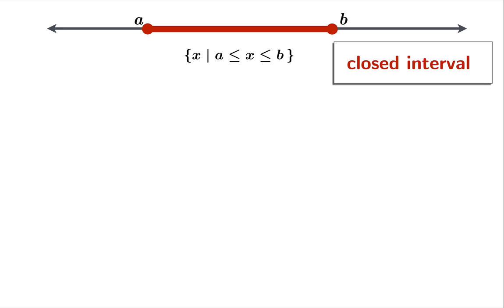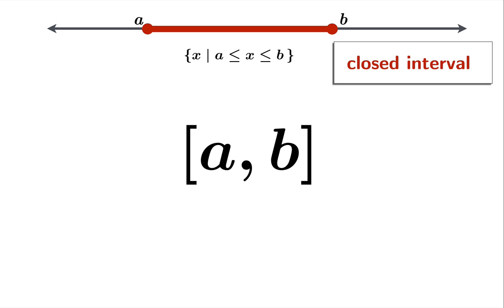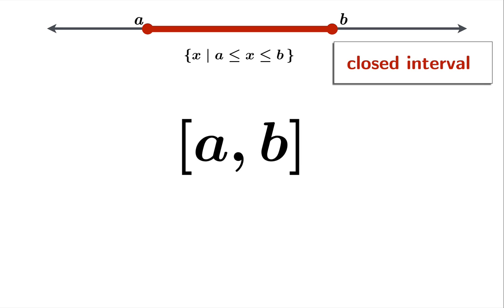There's a much easier notation, interval notation. In this case, interval notation would have us write A comma B with square brackets around the A and the B, and that is meant to indicate this set of numbers from A to B including the endpoints.